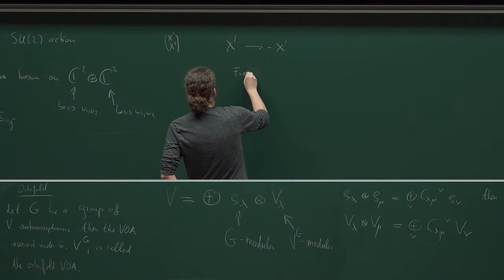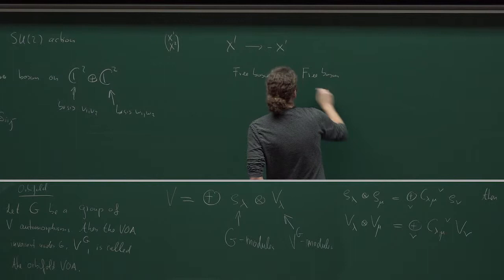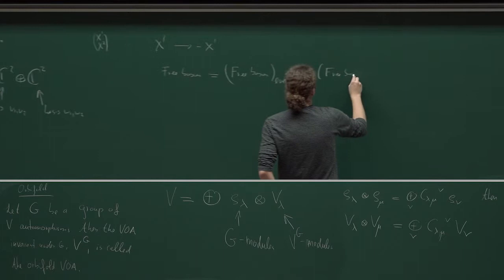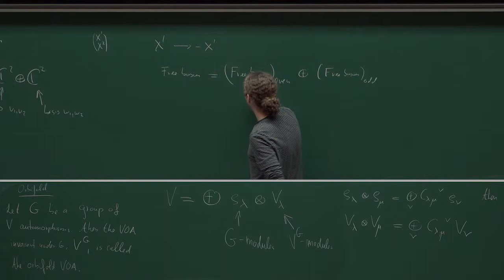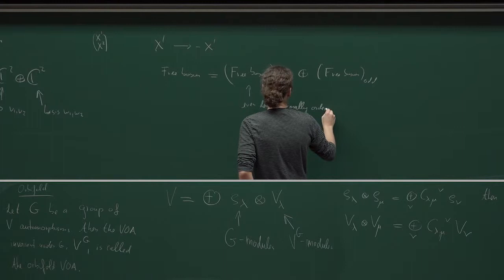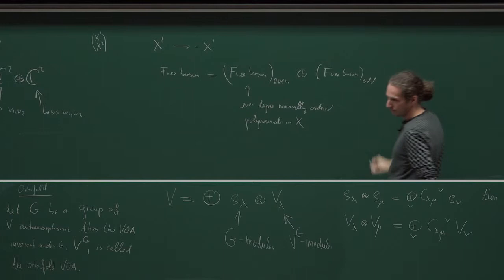And then we have our Heisenberg, our free boson. This free boson VOA decomposes now into the even part — that is, the part invariant under this action — plus the odd part. And what do we see? These are even-degree normally ordered polynomials in X and their derivatives, and here it is odd degree.